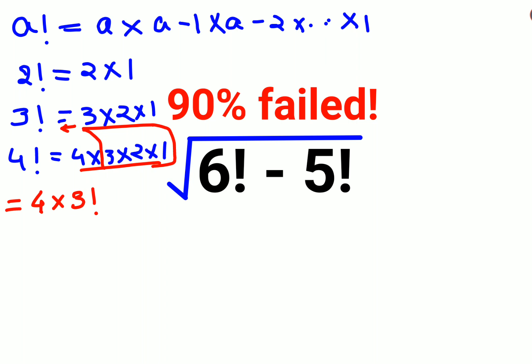From this we can understand that n factorial will always be written as n into n minus 1 factorial.